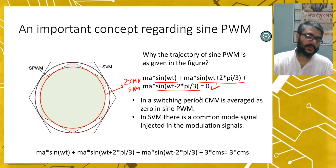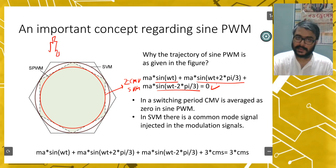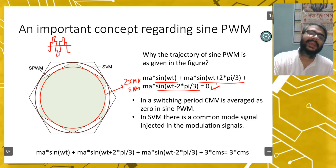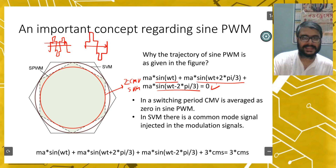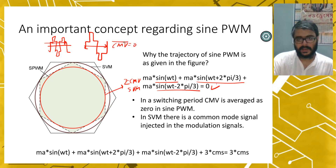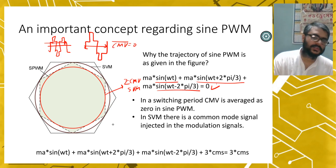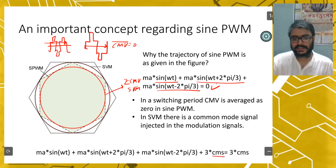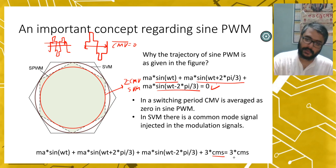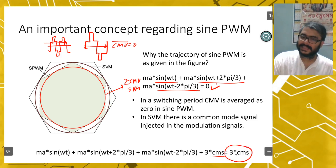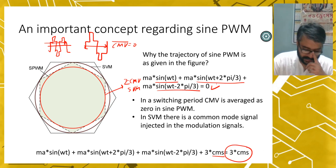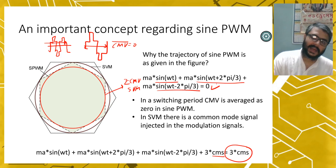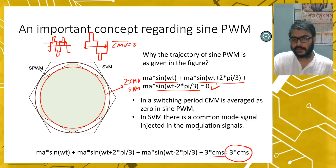However, when you use space vector modulation and add a common mode signal to all the phase voltages, the common mode voltage will become 3 times that common mode signal added to all phases. If you take the average over every switching cycle, it will not be zero — it will have some finite value that changes as 3·CMV.